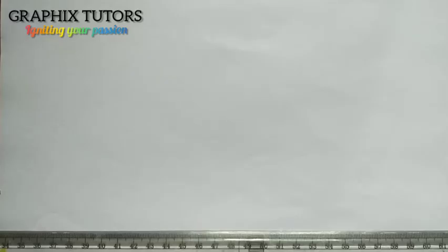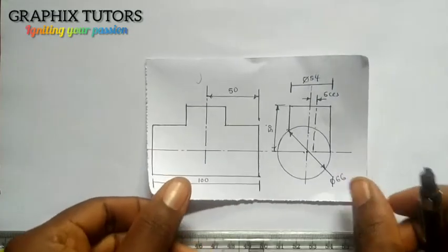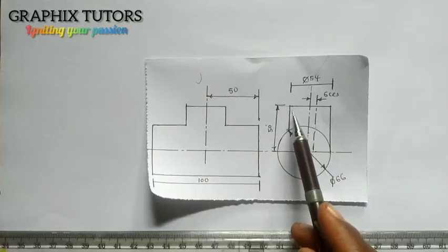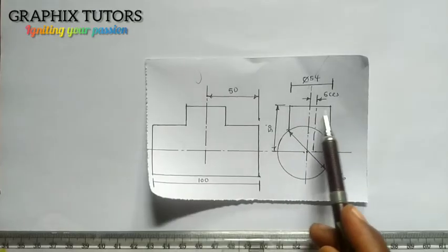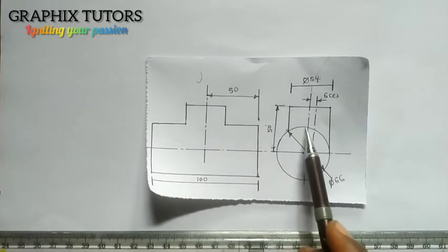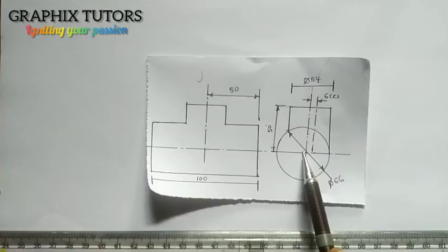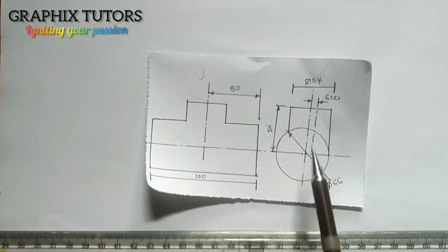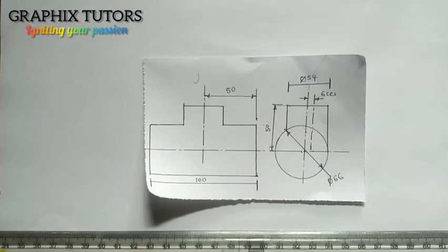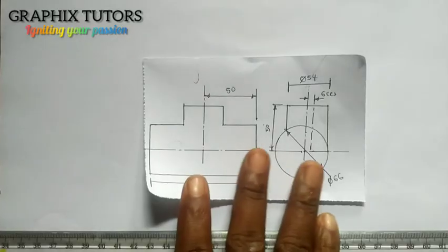Good everyone, my name is Graphics. Today we want to solve another exercise on interpenetration of arcs, but this time we'll be drawing two pipes that are offset — that means they don't have a common center. This is what we are about to draw. This pipe entering into the bigger pipe does not have the same center; the centers are different.